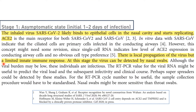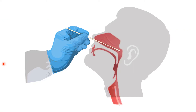This stage is known as the asymptomatic phase, or the initial one to two days of infection. The inhaled SARS-CoV-2 binds to the epithelial cells in the nasal cavity and starts replicating. The ACE2 receptors act as a receptor attachment. There is local propagation of the virus but with a limited innate immune response. At this stage, the virus may be detected by nasal swab.